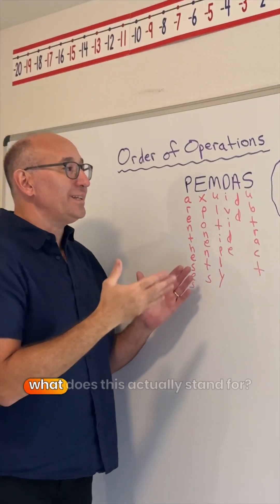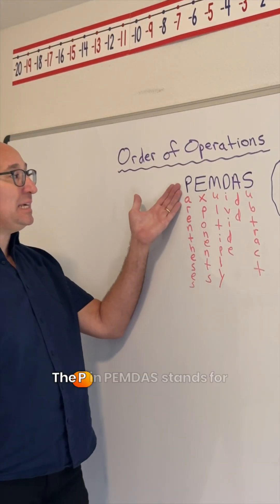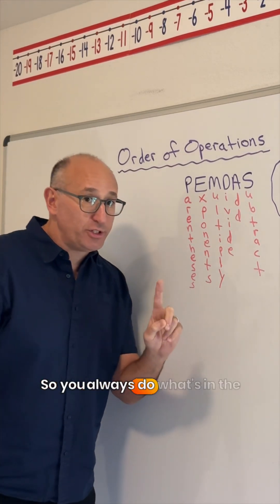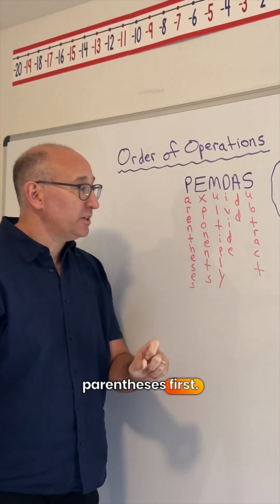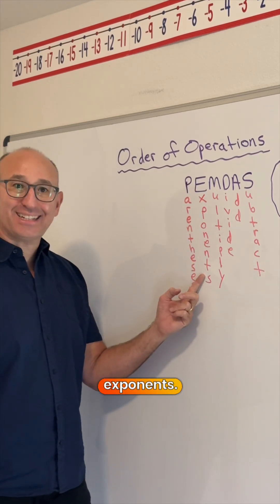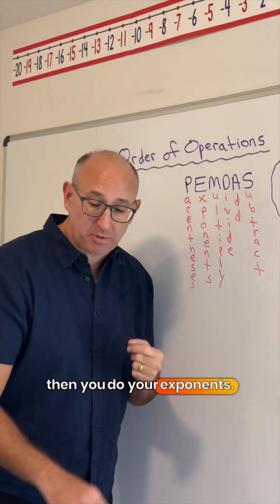Now, what does this actually stand for? The P in PEMDAS stands for parentheses. So you always do what's in the parentheses first. The next thing you get to do is the E, and the E stands for exponents. So first you do your parentheses, then you do your exponents.